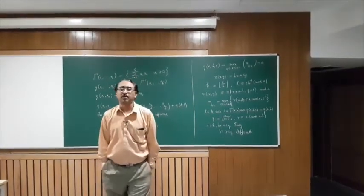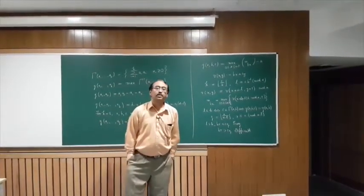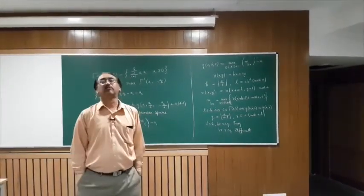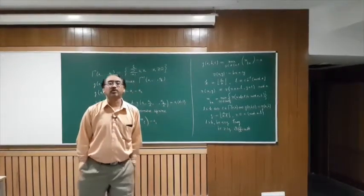It's well known that the complement of gamma is a finite set, and therefore we can define the maximum element in the complement of gamma and call it the Frobenius number g, g of a1 to ak.